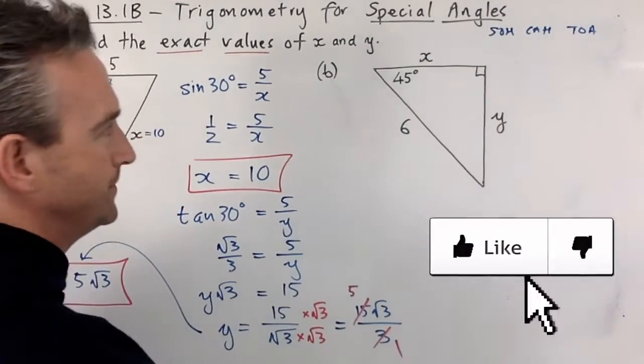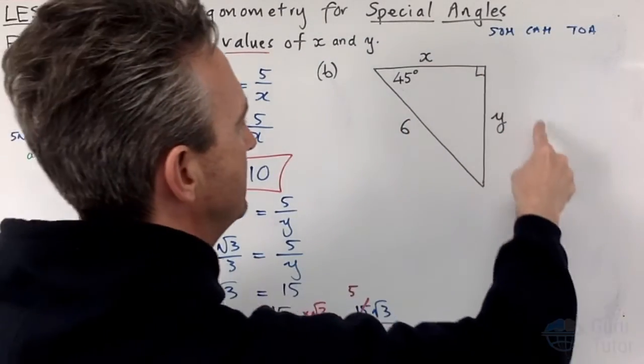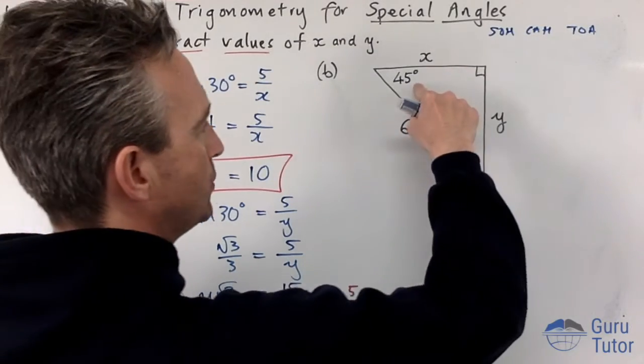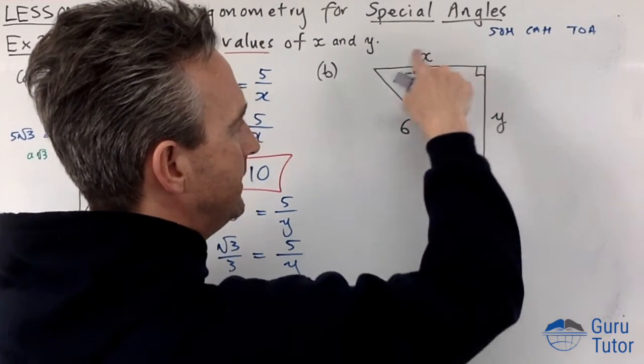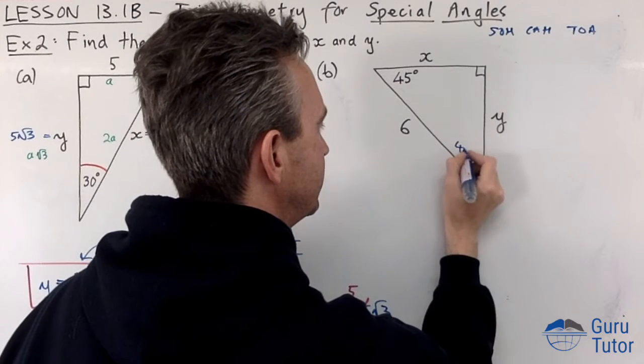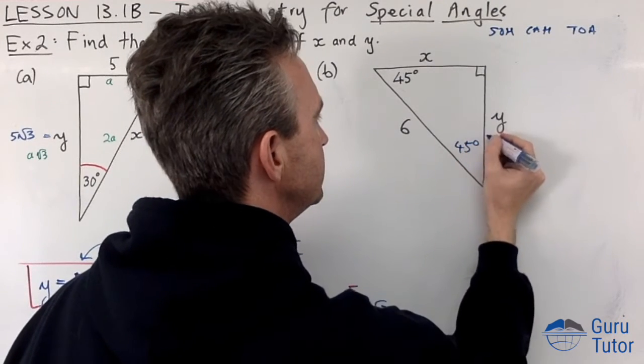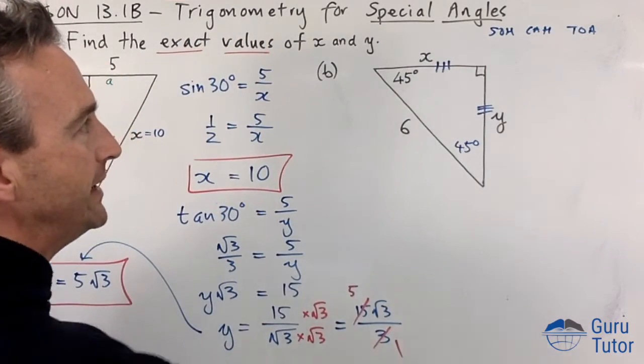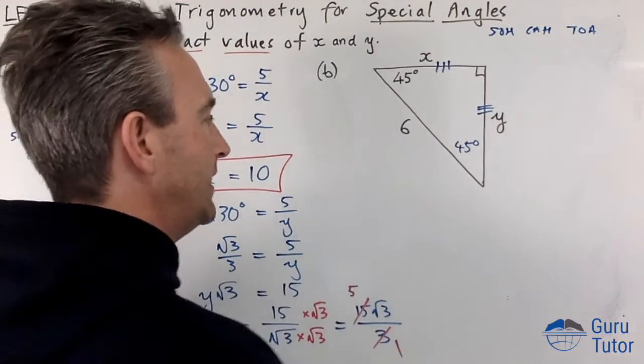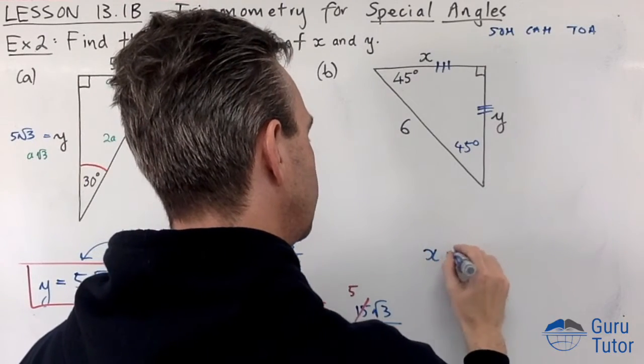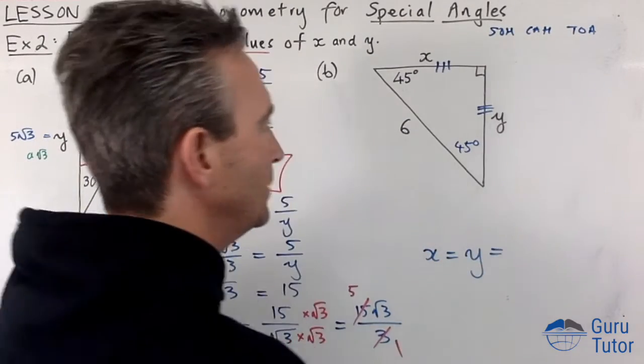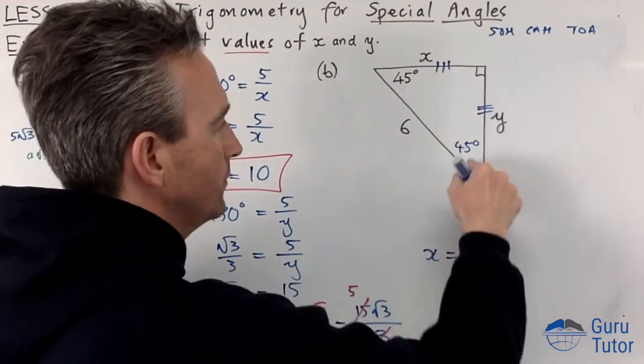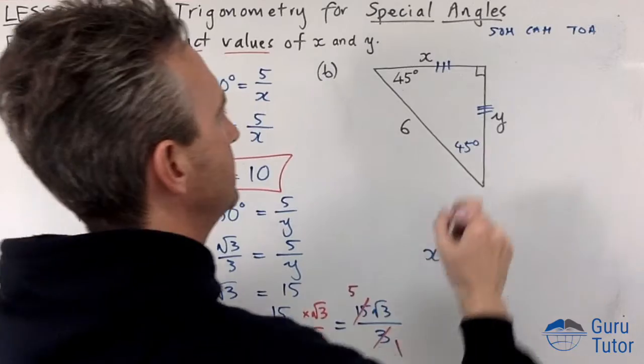Now we are on to b, we're going to find x and y here again. Now this is kind of easy because what kind of triangle do we have here? Well this is 45, 90, if you do the angle sum of a triangle you get this is 45 as well. So this is actually an isosceles triangle, which means x and y are equal, whatever x is or y is they're actually going to be the same.